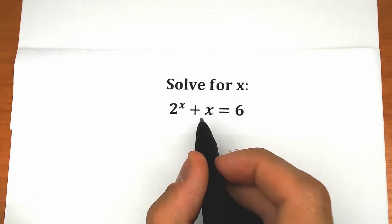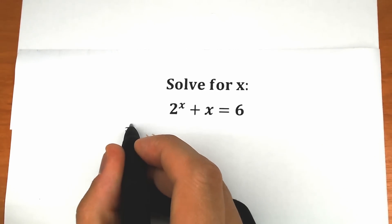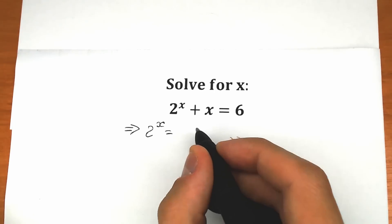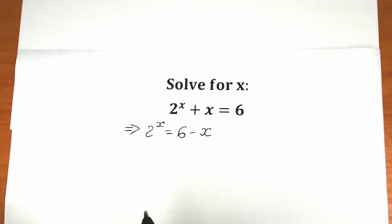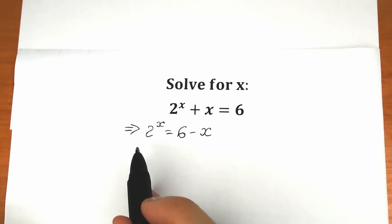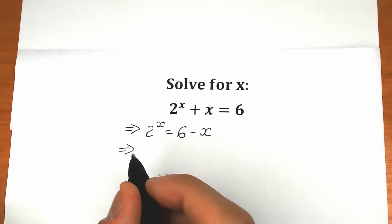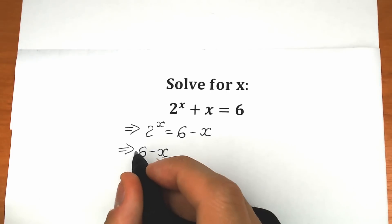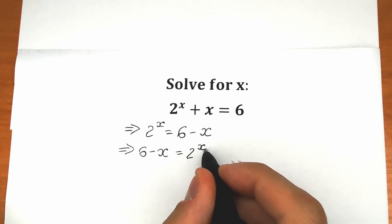First of all, let's bring x from our left side to the right side. What do we have as a result? We have 2 to the power x equal to 6 minus x. Now let's change position because we prefer the larger expression on the left side, so we have 6 minus x equal to 2 to the power x.